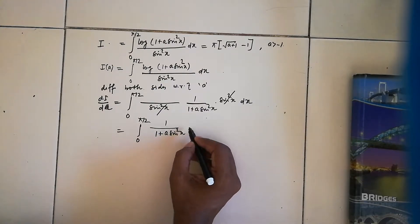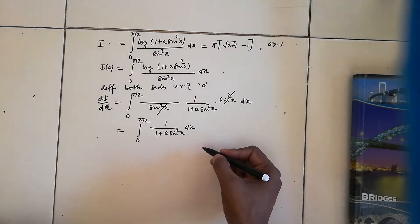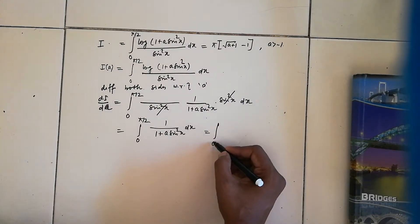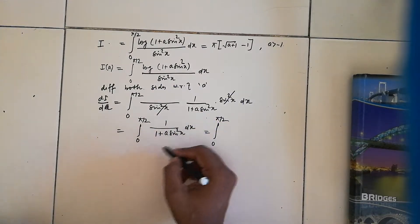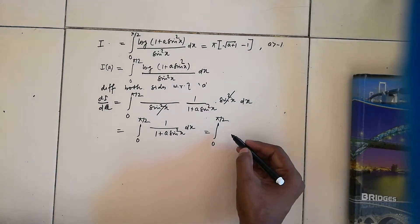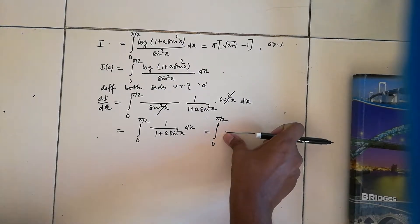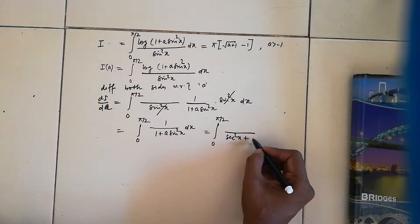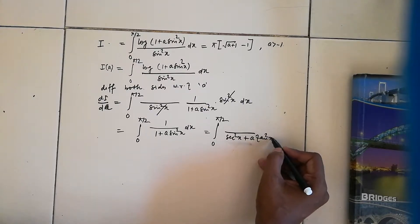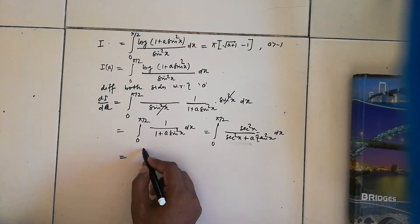Now to solve this integral, we use a special technique: divide numerator and denominator by cos²x. This transforms the integral from 0 to pi/2 into sec²x / (sec²x + a·tan²x) dx, which becomes sec²x / (sec²x + a·tan²x) dx.